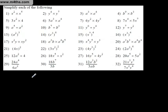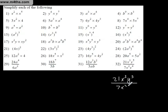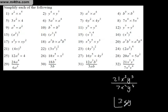Dividing algebraic fractions is something we need to be comfortable with. We've got 21X cubed Y to the 5th over 7X squared Y to the 4th. Dealing with the numeric part: that gives us 3. X cubed over X squared is X to the first power. Y to the 5th divided by Y to the 4th is just Y. So nice and straightforward — we've simplified that to 3XY.